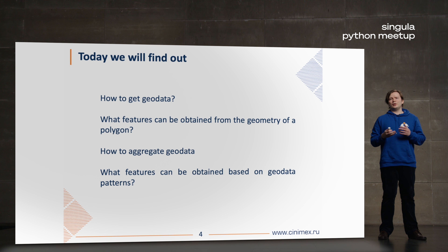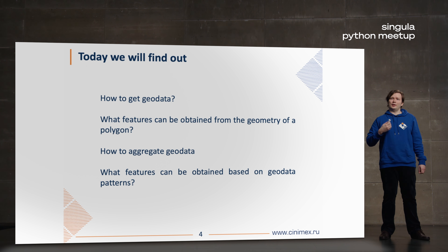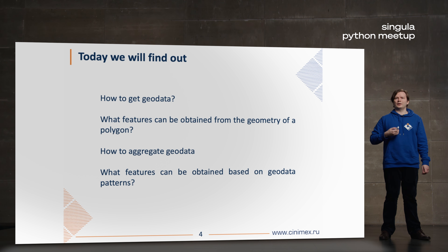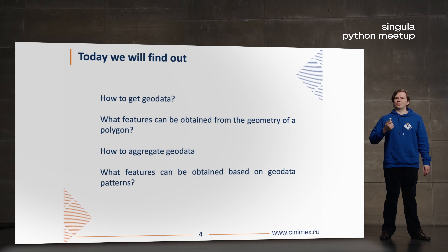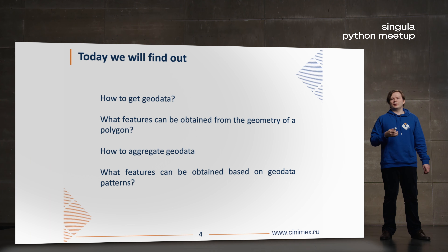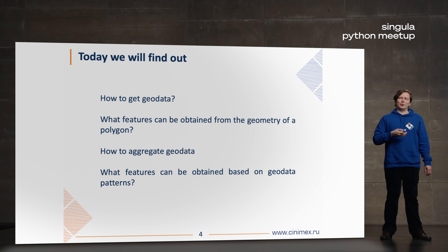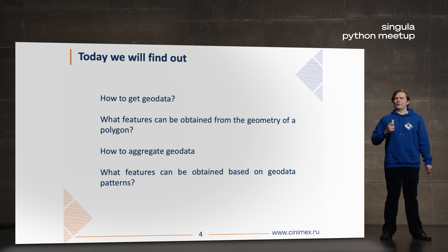Today we are going to discuss which ways we can obtain our geodata. Secondly, we will discuss which types of features we can generate based on shapes and geometries. We will also discuss how we can aggregate our data, and finally, which features we can obtain using knowledge of spatial patterns.